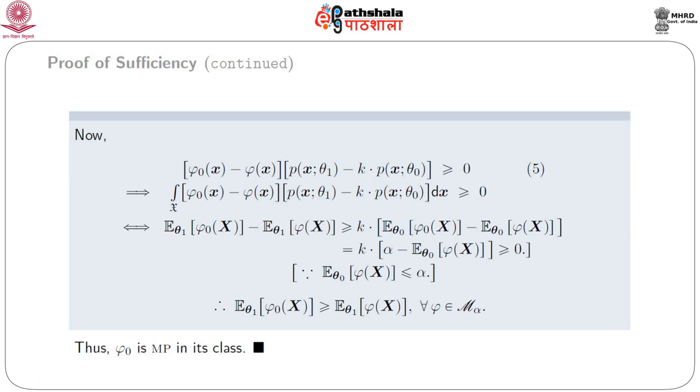In this part we have given the idea of getting the most powerful or uniformly most powerful test using distributions whose range is independent of the parameter under consideration. In the next part of the section, we will give some idea when the range of the distribution depends on theta.